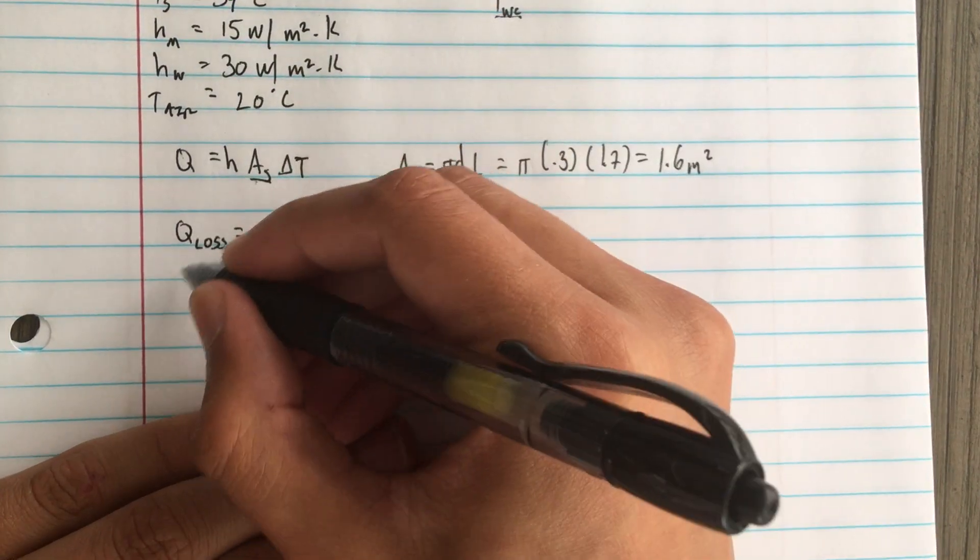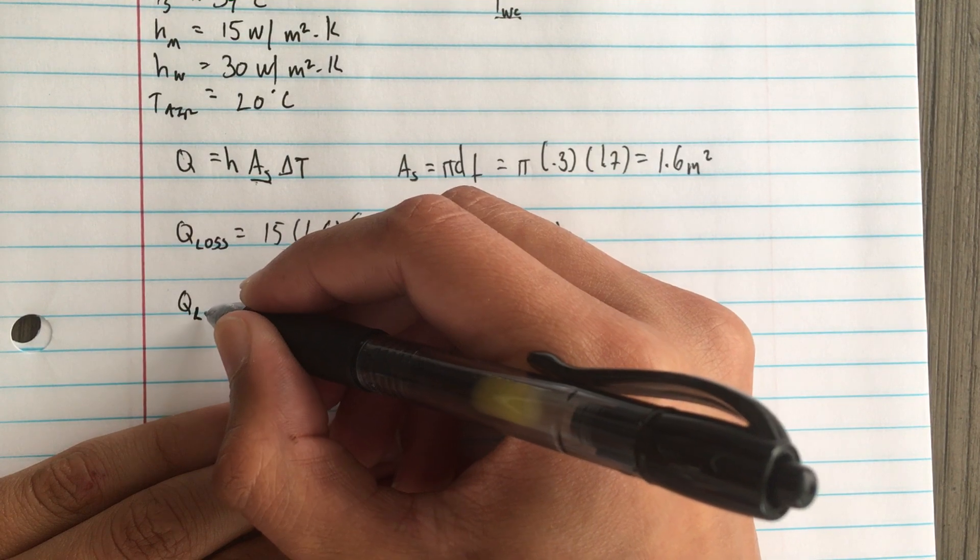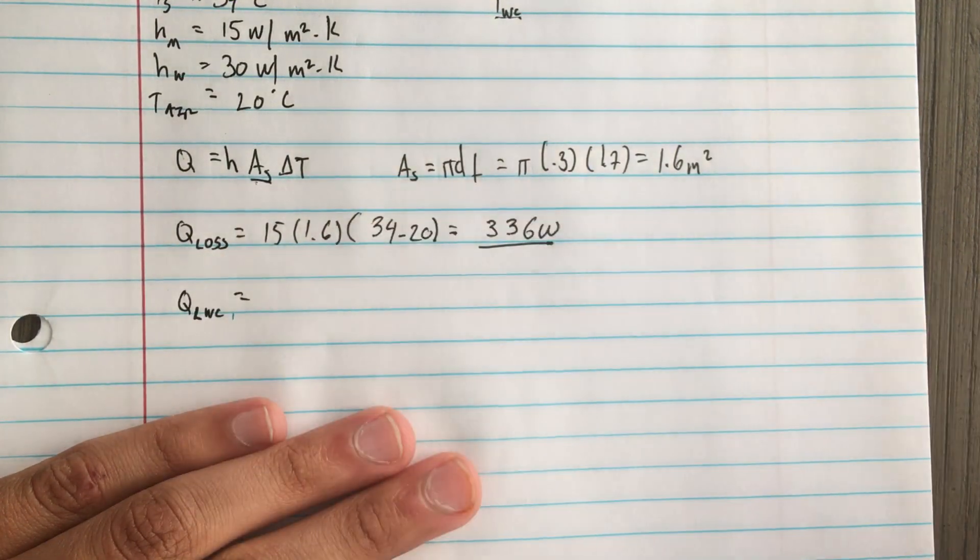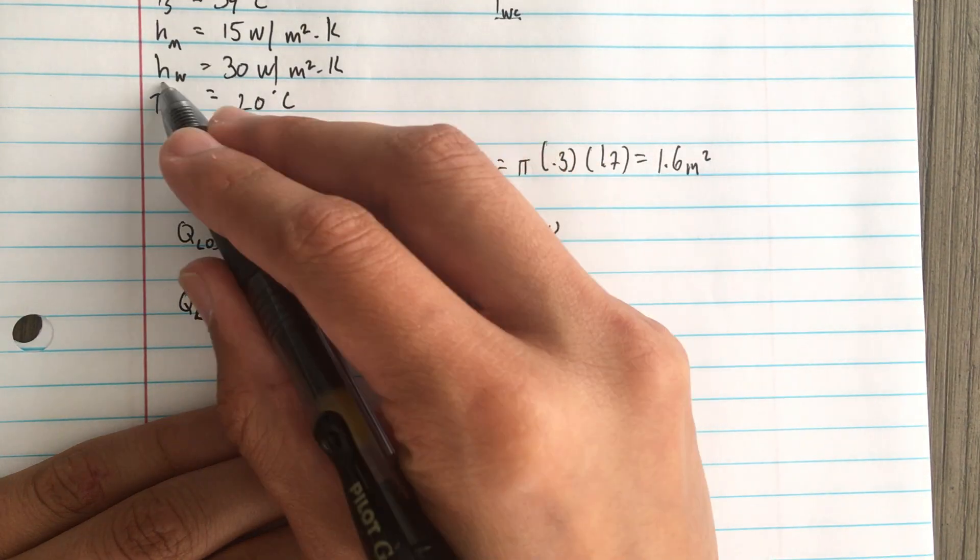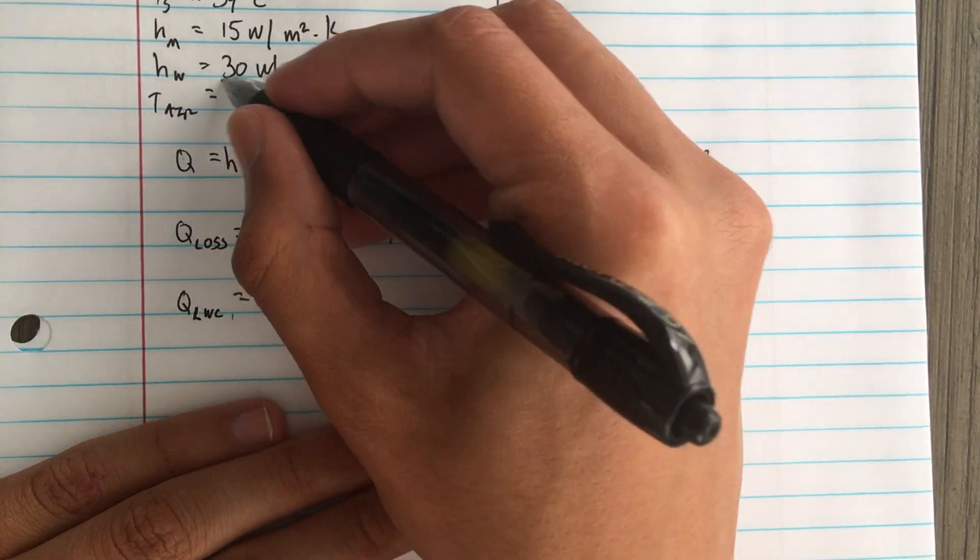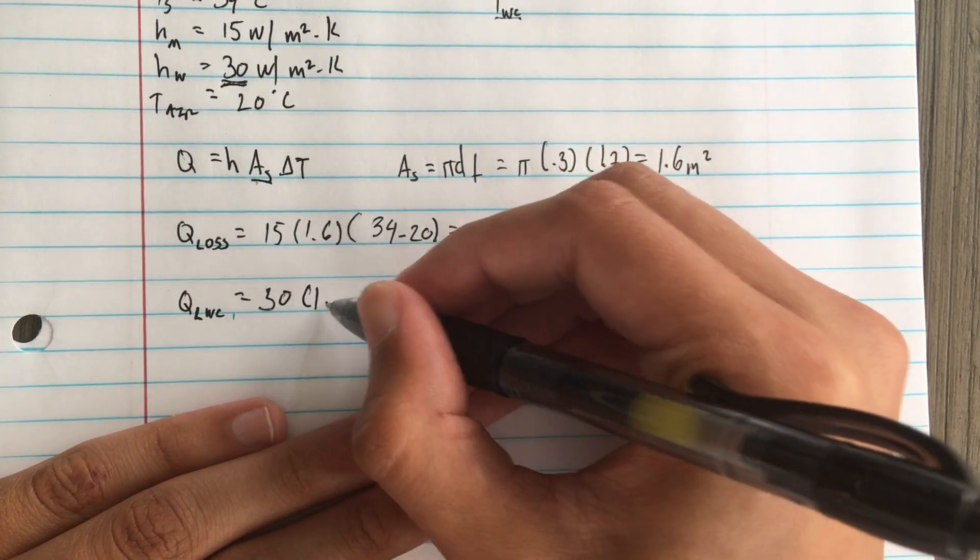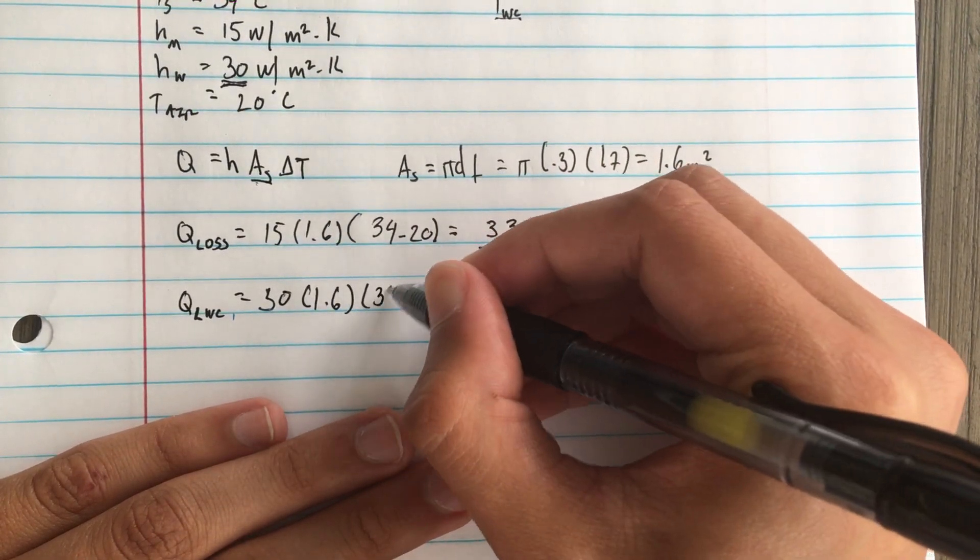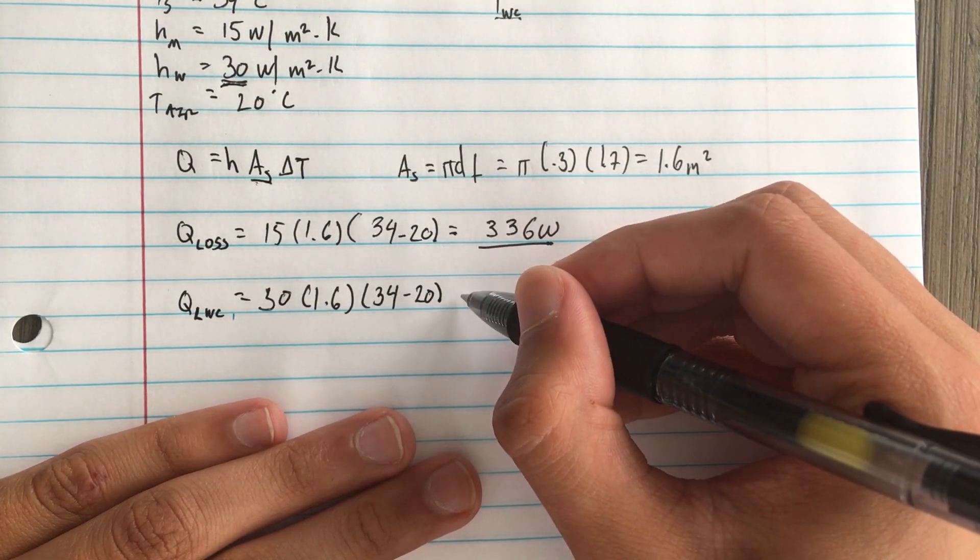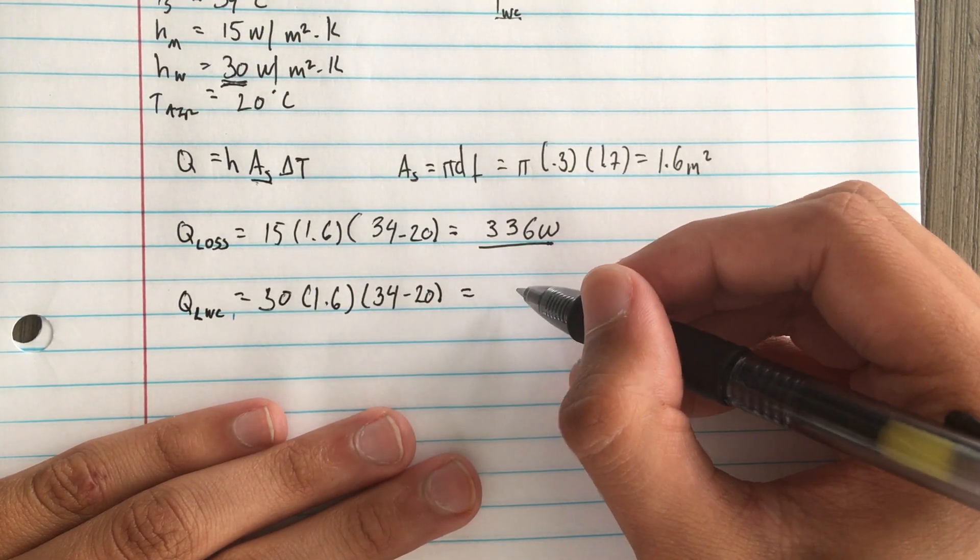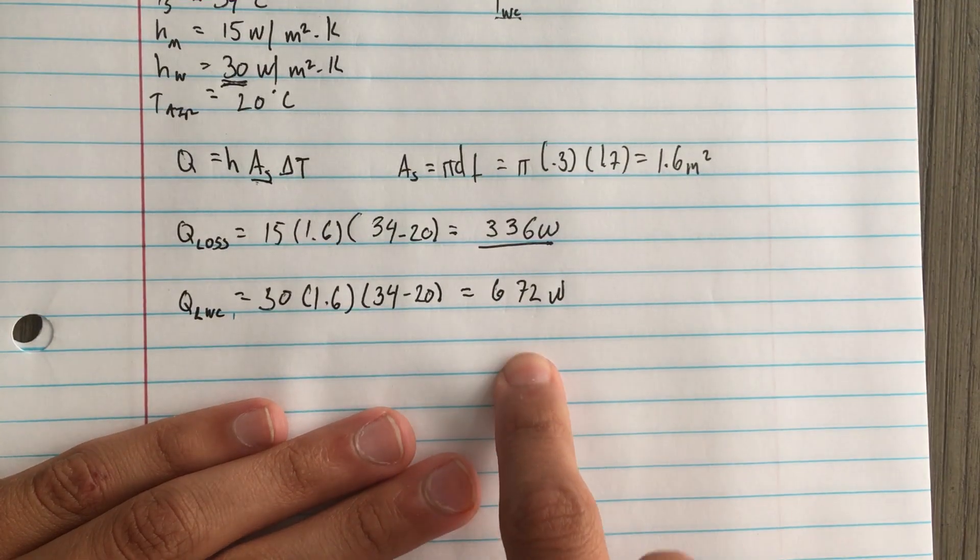Now to find the wind chill we do this equation again. The heat loss with the wind chill—again we have this equation, now because we're doing wind, and again this is the same. That gives us 672 watts. Now we're not done here.